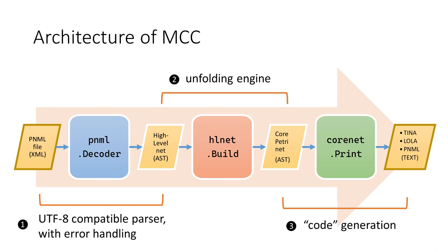Basically, the architecture of MCC is designed to resemble that of a compiler that translates high-level code — in this case, colored nets — into low-level instructions. We follow a traditional structure with three stages where PNML corresponds to the front-end, responsible for syntax and semantics analysis. HLNet provides the intermediate representation, and CoreNet is the back-end. Most papers on colored net unfolding focus on this intermediate step, where the theoretical results lie. The last step, code generation, is less interesting since it is mostly independent from the input language.